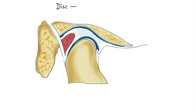Now let's see the different bony parts of TMJ. The articular disc is composed of dense fibrous connective tissue and most of it is devoid of any blood vessels or nerve fibers. You should remember for competitive exams that it is composed of fibrocartilage, not hyaline cartilage. The extreme periphery of the disc, however, is slightly innervated.